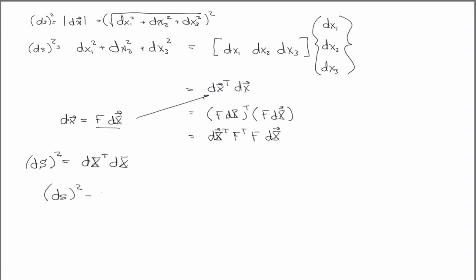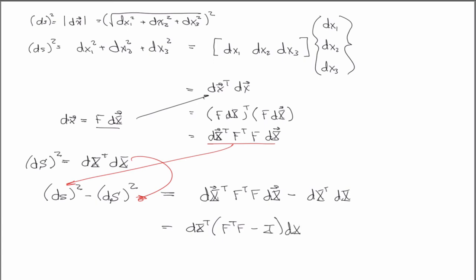Okay. So one measure of the change in length is the difference in the squares. So if I write this like this, and just plug in the definitions, this guy here, this guy here, then I have that this is equal to D big X transpose, F transpose, F, D big X, minus D big X transpose, D big X. And now I'm going to factor out my DX, so I have DX transpose, F transpose, F minus I, DX.